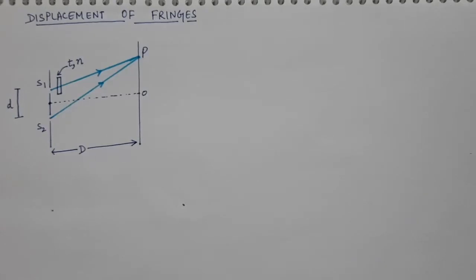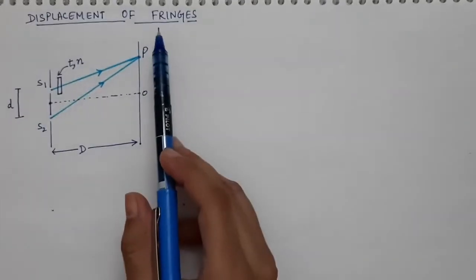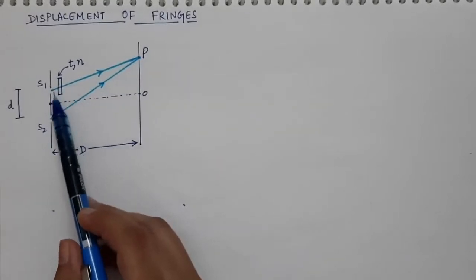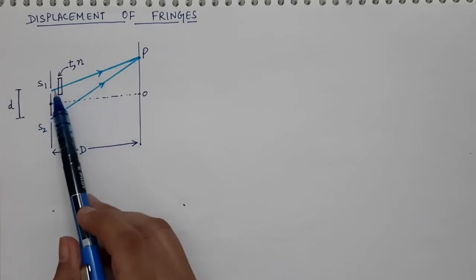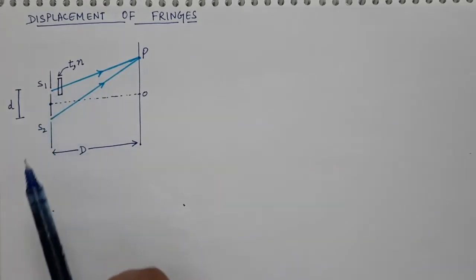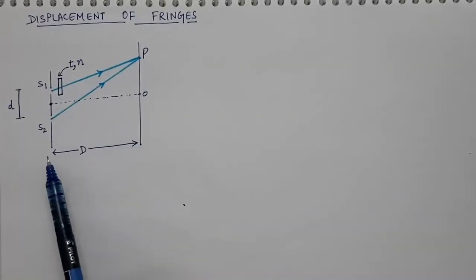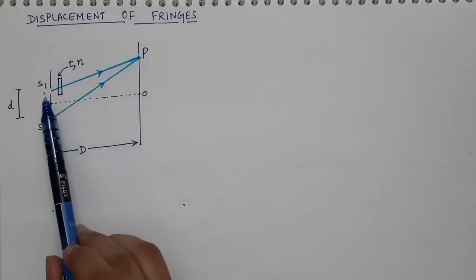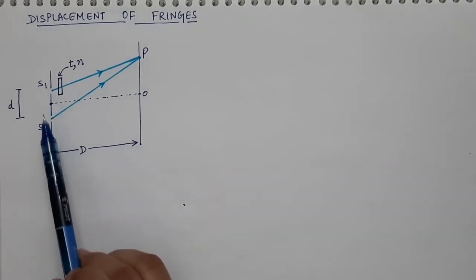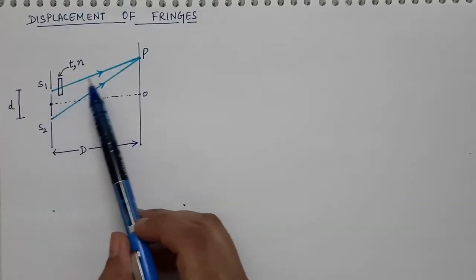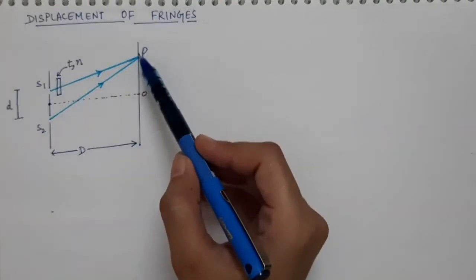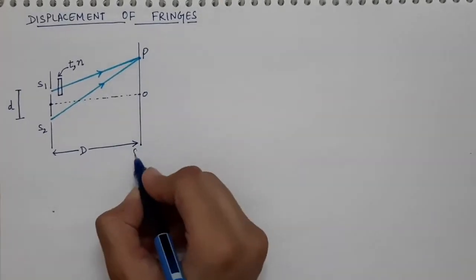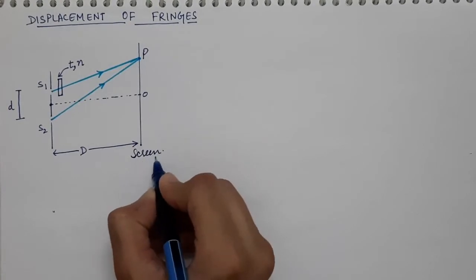Now we are going to discuss the displacement of fringes when a thin sheet of a particular material is placed in the path of the light which is coming from one of the sources. We already know in the case of Young's double slit experiment we had two coherent sources, that is two slits which behaved as two coherent sources, and the light from those sources was made to interfere on the screen, producing an interference pattern.